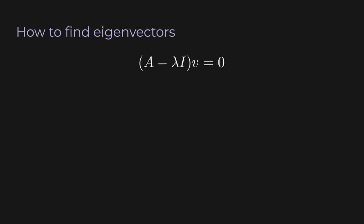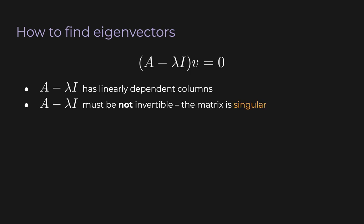Let's spend a minute analyzing this equation. It's possible that the only vector v that satisfies this equation is the zero vector — then the matrix A minus lambda I is full rank. But if A minus lambda I actually has linearly dependent columns, then there must be some non-zero v that satisfies this equation. Now imagine lambda is a variable that is free to change. We want to find values of lambda such that A minus lambda I is not invertible. If it were invertible, we'd just apply the inverse matrix to both sides and see that v equals the zero vector.